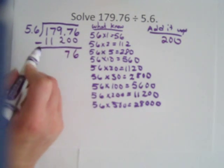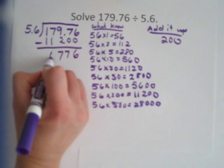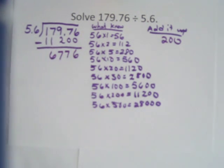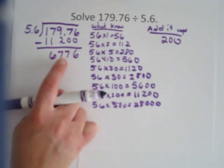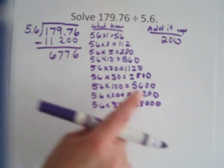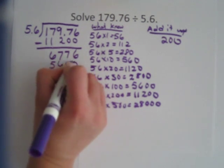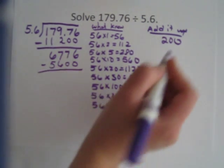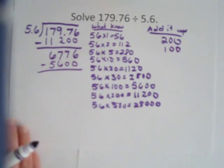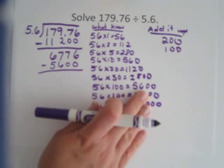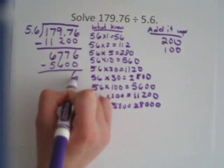So 6,7... Again ignoring that decimal right now, completely. Now what's closest to 6,776 without going over is 5,600. So I'm going to now subtract out that number, and I'm going to put the 100 under my added up for the 5,600. I'm going to subtract.